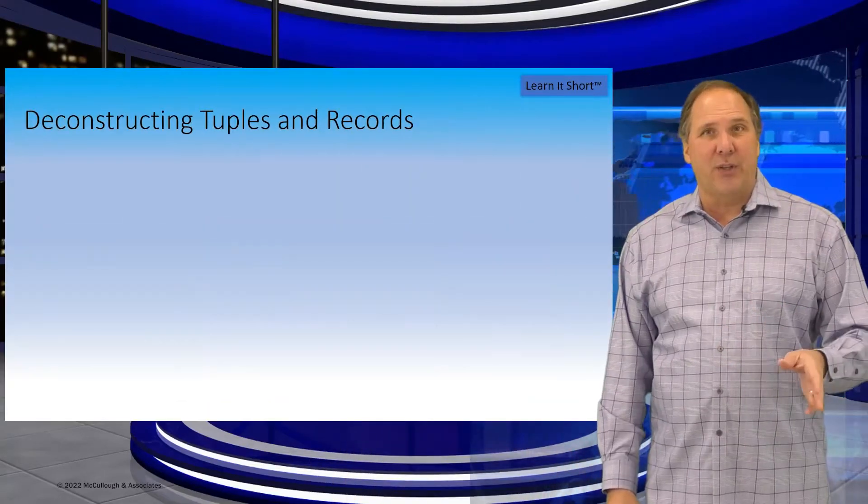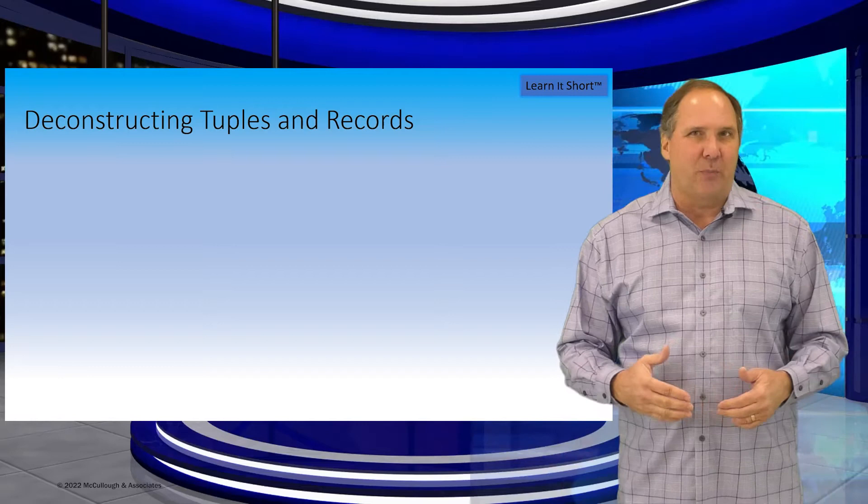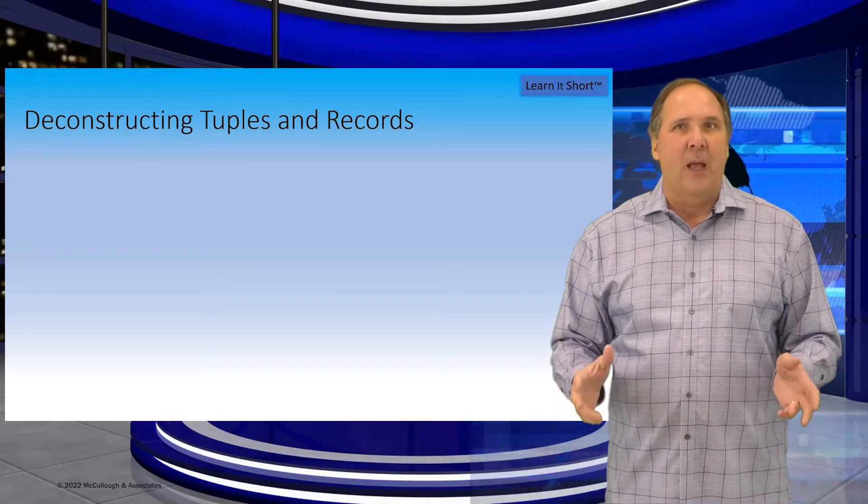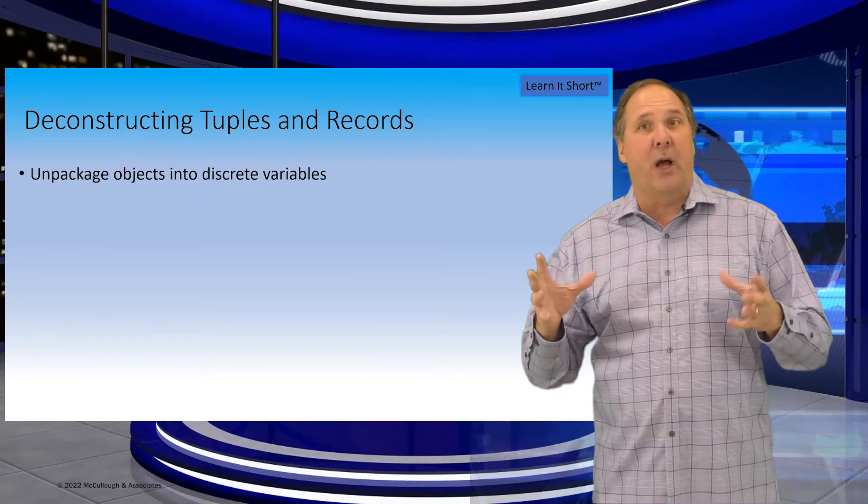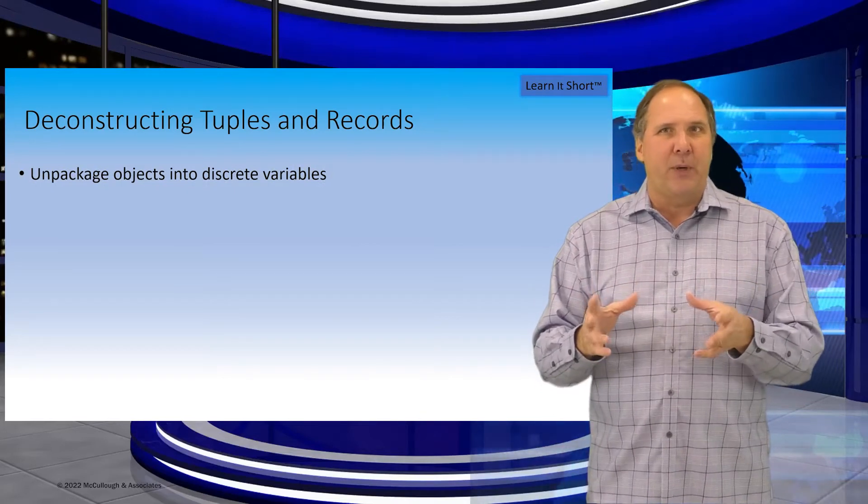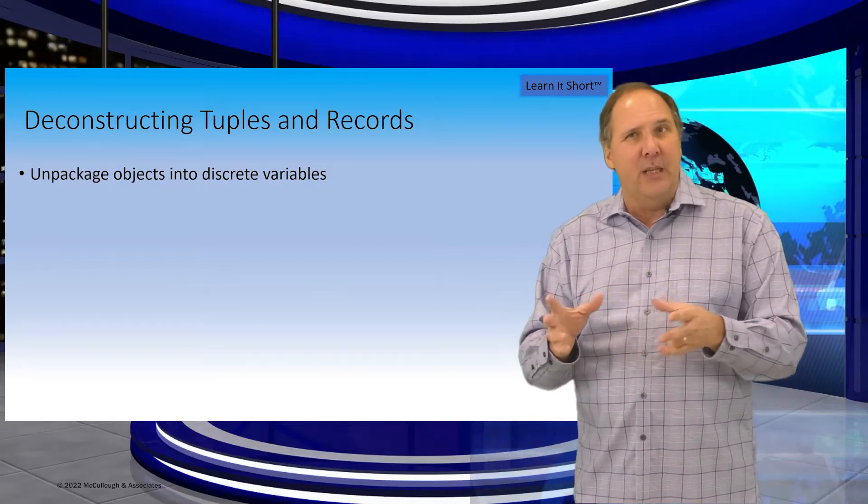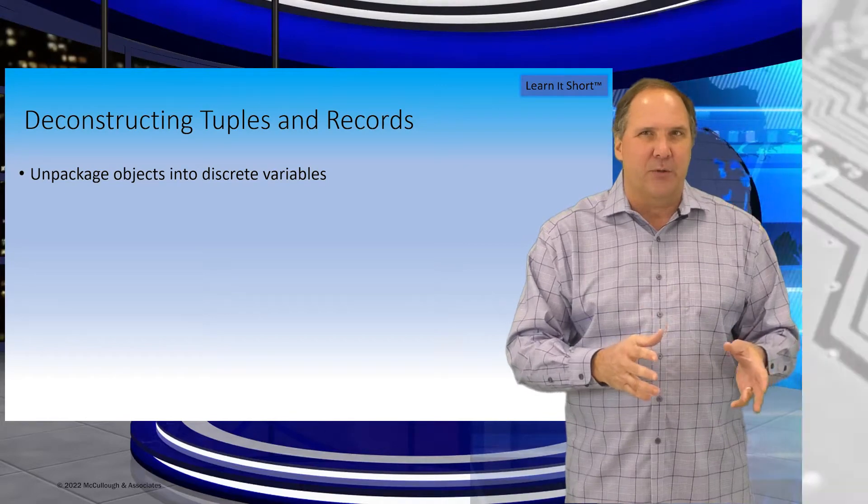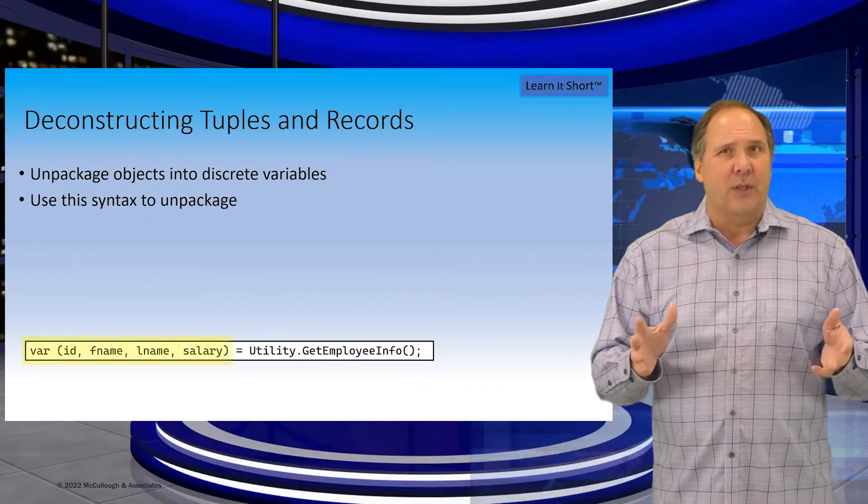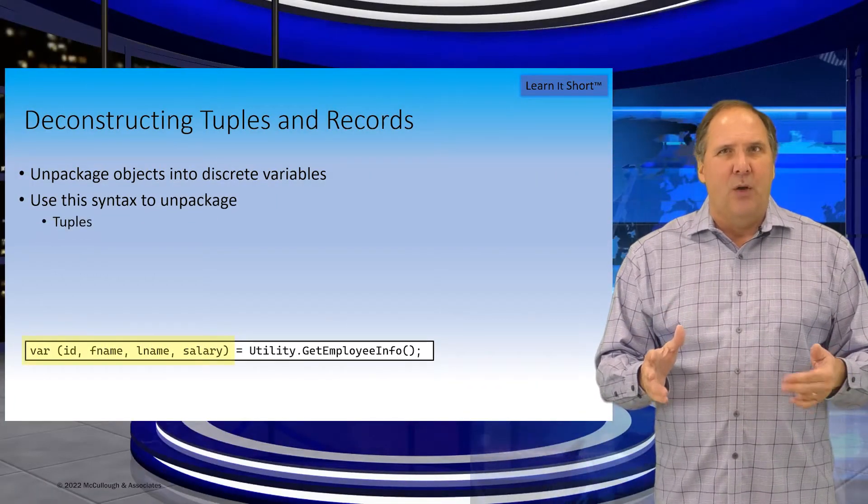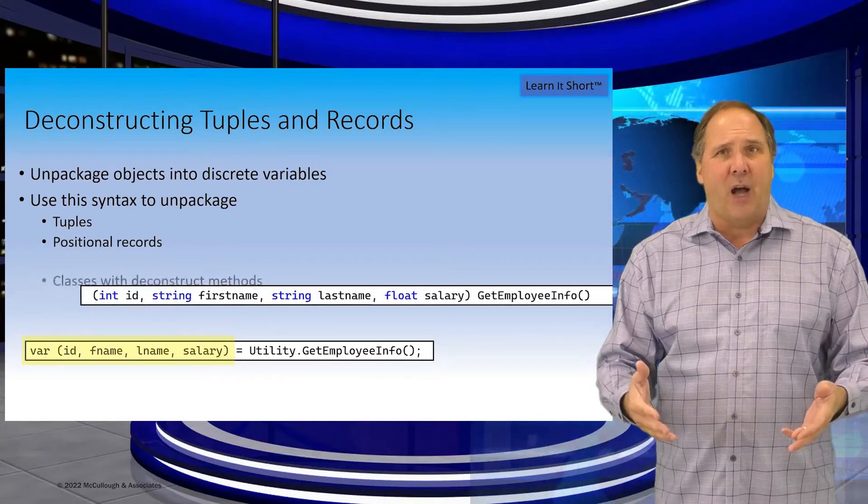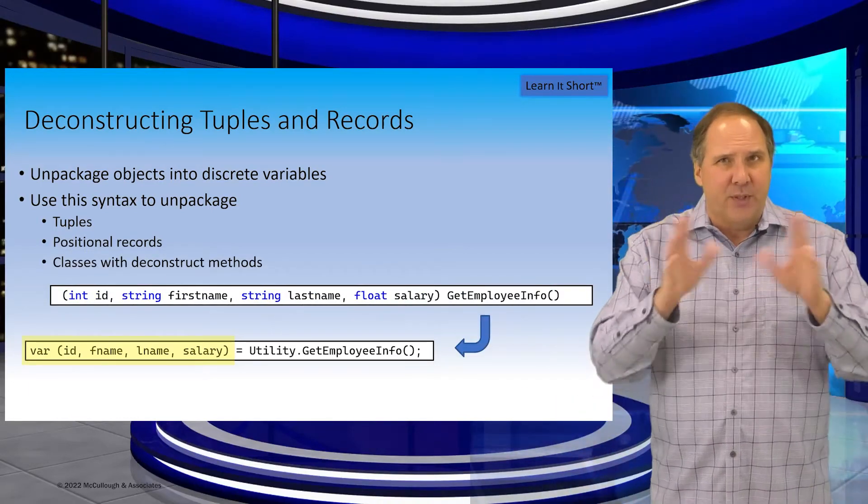Deconstruction is a feature in C Sharp primarily associated with tuples, allowing us to project or unpack the properties of an object into discrete variables. To deconstruct a tuple, for example, we assign to a list of comma-separated variables in parentheses.